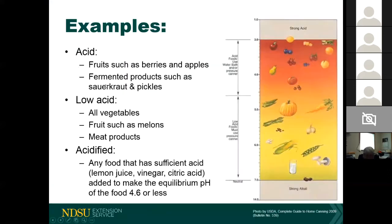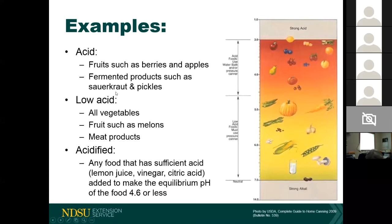Examples of acid foods include fruits like berries and apples, and fermented products like sauerkraut and pickles. Most fruits and berries fall in this acid category. With sauerkraut and pickles, it's important that during fermentation the pH drops to sufficiently acid conditions. Low acid foods are basically all vegetables — you can generally assume vegetables are going to be low acid.